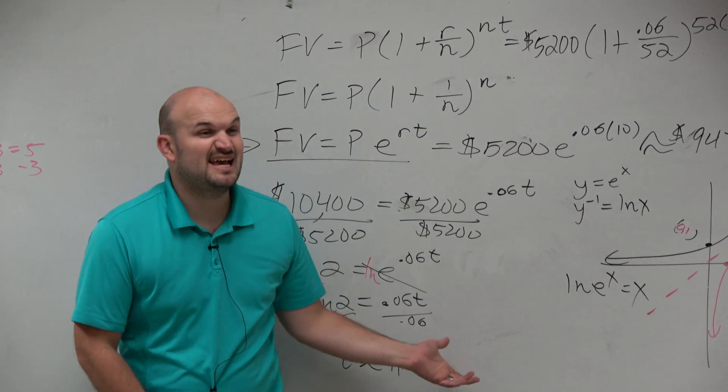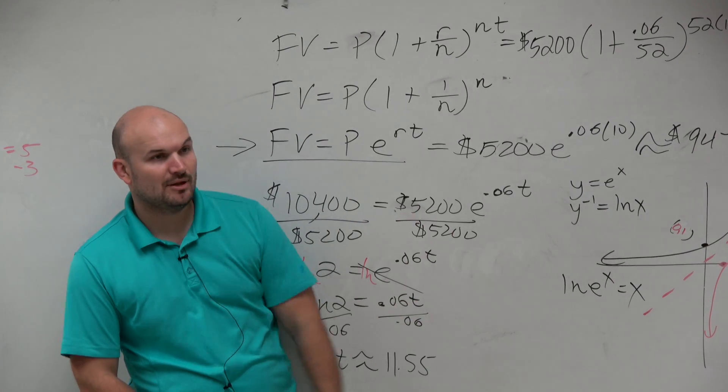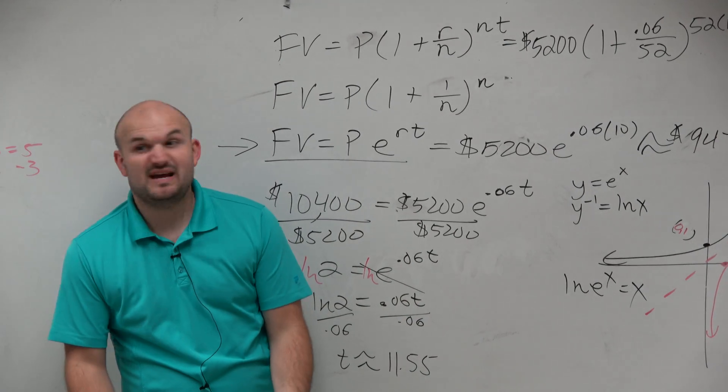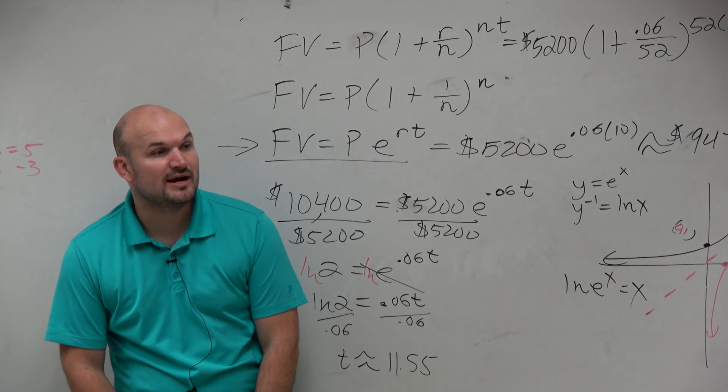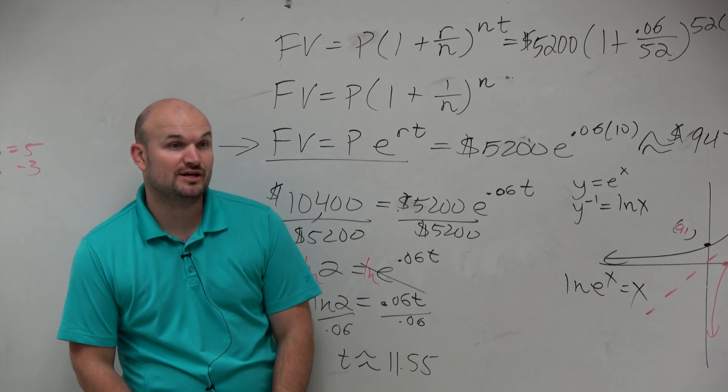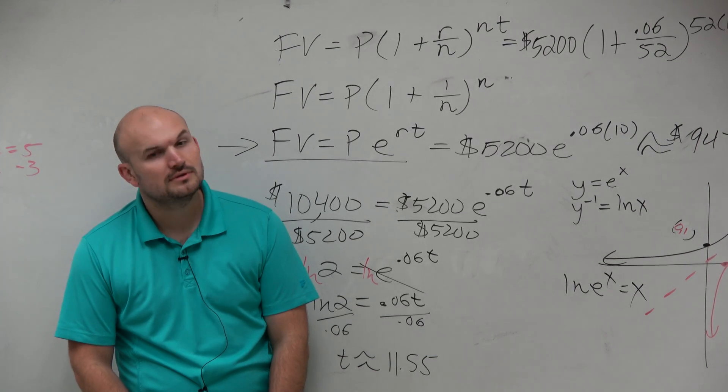t is approximately ln of 2 divided by 0.06, which equals 11.55. So how long does it take, roughly? How long does it take for us to double our money? 11 and a half years. So 11 years and 6 months. If you rounded it to the nearest full year, it would be 12, right?